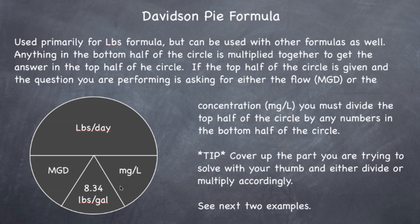And the tip that they kind of give operators to do is to cover up whatever you're looking for with your thumb. So, if you're looking for milligrams per liter, you would cover this up with your thumb and that would let you know to divide pounds by MGD by 8.34. And if you were looking for pounds, you would cover this up with your thumb and you would multiply all these guys together to get your pounds per day. Okay. I know we're going to go over that in two examples.